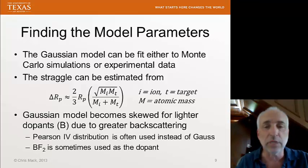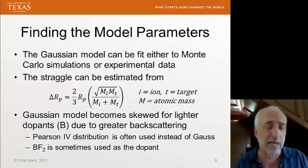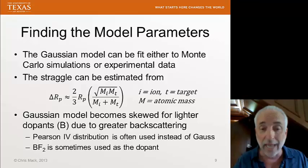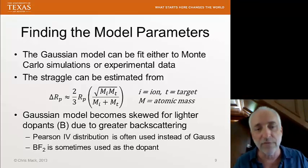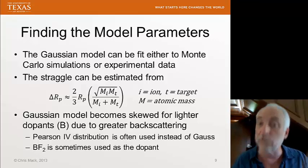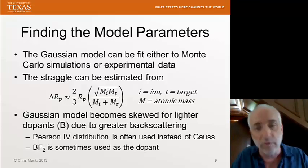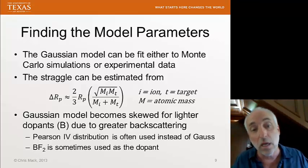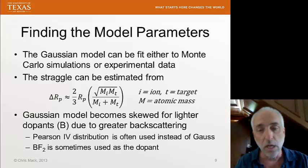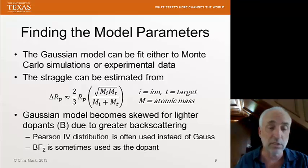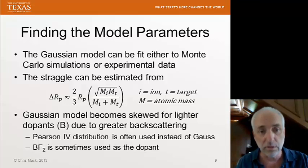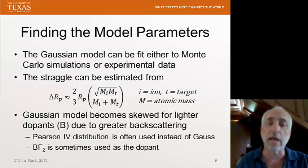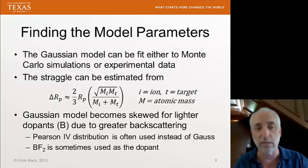The Gaussian model becomes skewed for lighter dopants due to backscattering. The lighter the dopant, the more backscattering events, and the skew produces higher dopant concentrations near the top surface. To characterize the skewed distribution better, instead of using a Gaussian — which is perfectly symmetric about the mean — we use the Pearson 4 distribution. If we want a more symmetric distribution, we need a heavier dopant. One approach with boron is to use boron difluoride as the implanted ion rather than pure boron.